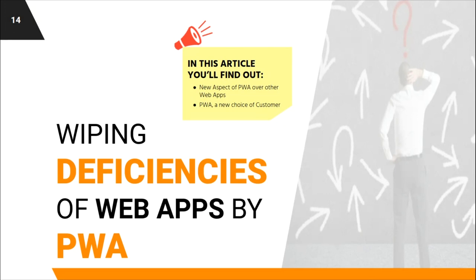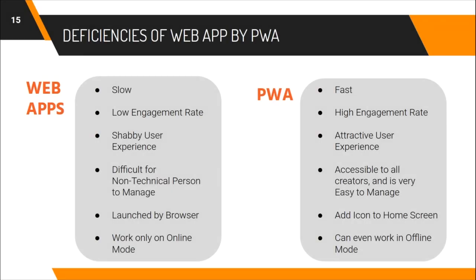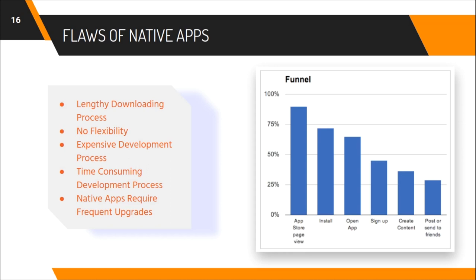Now let's look at the deficiencies that earlier web apps had and which PWA overcomes. Web apps are slow whereas PWA is fast because of its remarkable speed, caching techniques, and optimized image processing. Web apps have low engagement rates whereas PWA has high engagement because it can be added to your home screen and send push notifications. Web apps have poor user experiences whereas PWA has attractive ones — content doesn't jump as the page loads, and pressing back returns to the correct position on the previous list page. Web apps also don't work offline, but with the service worker, PWA can work in offline mode.